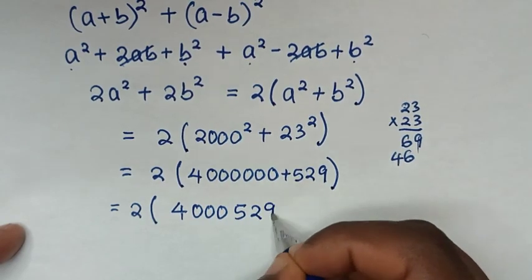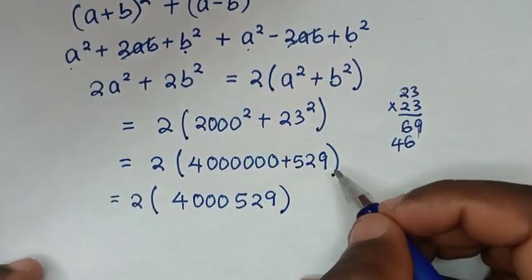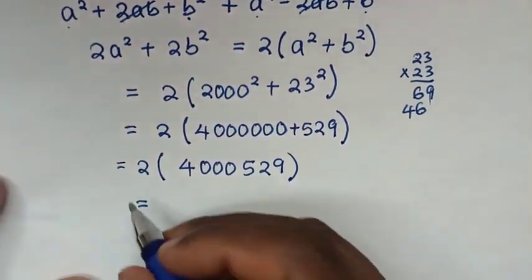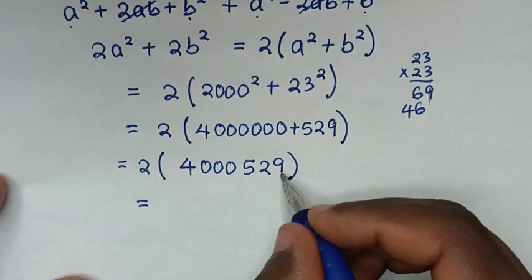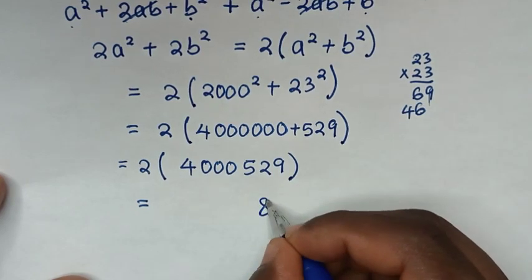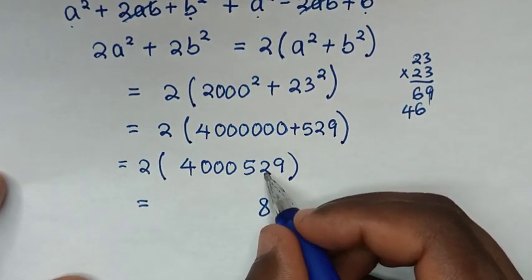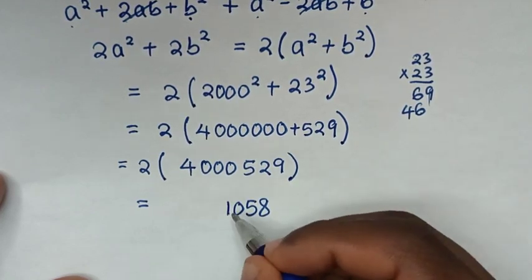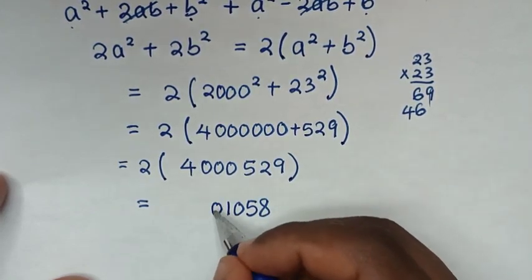Finally, 2 times 4,000,529 equals 8,001,058.